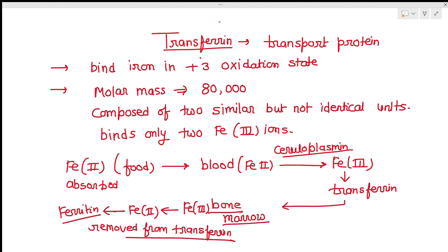When RBCs become aged after their average life of 16 weeks, the hemoglobin is also decomposed. Then the iron is again recovered, transferred by transferrin, and again oxidized to Fe³⁺. So iron is usually transferred by transferrin in the Fe³⁺ form, then stored in ferritin, and whenever it is needed it comes from ferritin to transferrin and is used again.